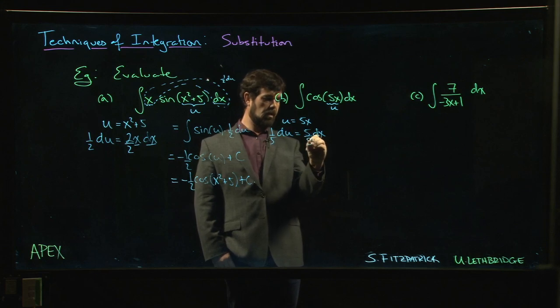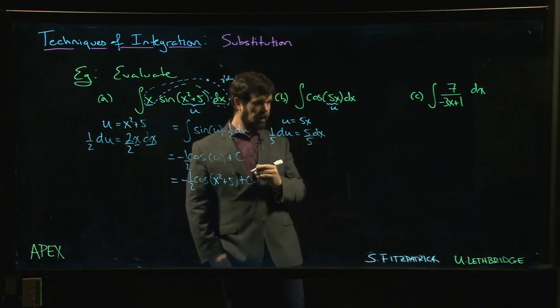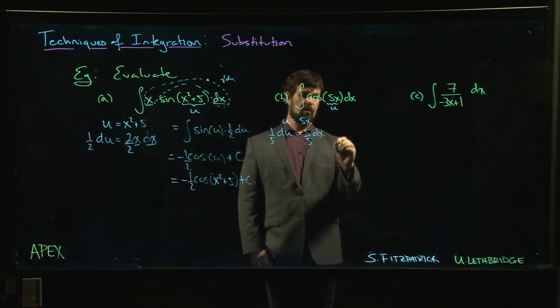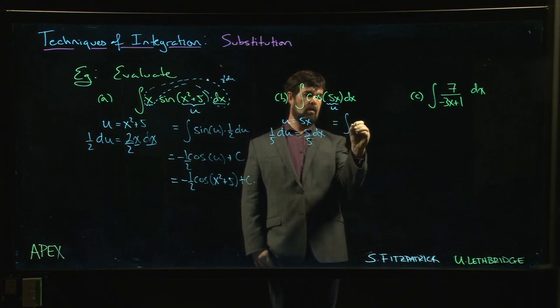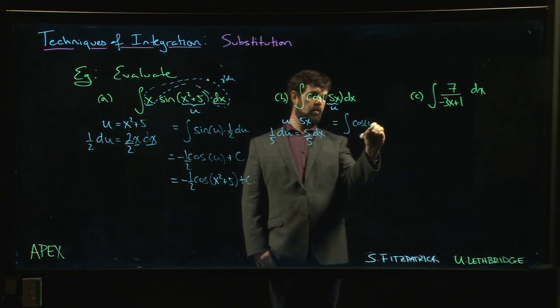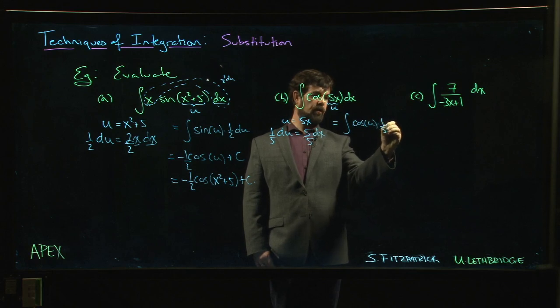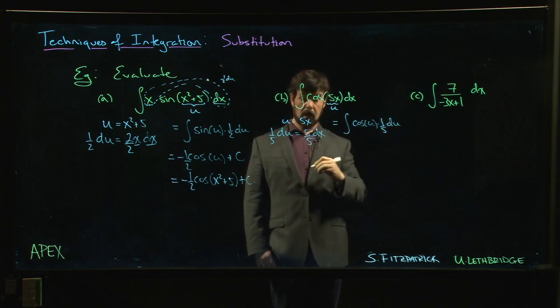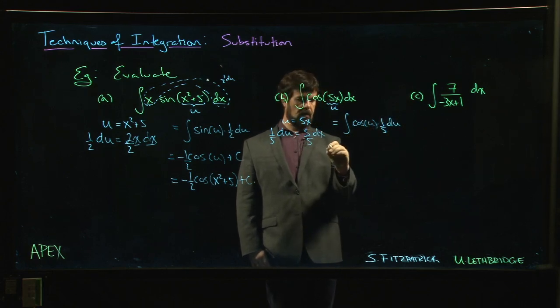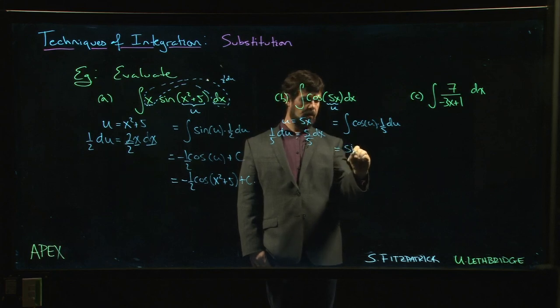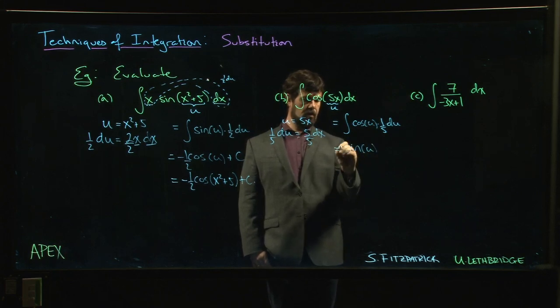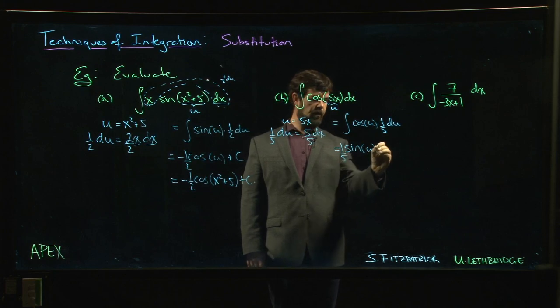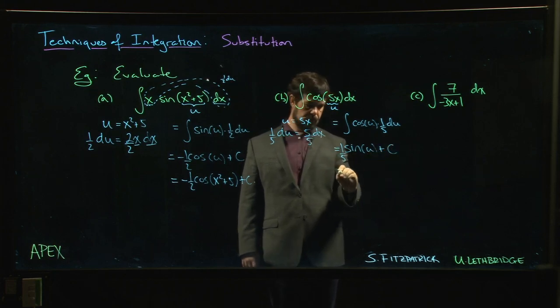So this is just the integral of cos u times one over five times du. Antiderivative of cosine is sine, so sine u times a fifth plus c. Put the u back in terms of x, and you got it.